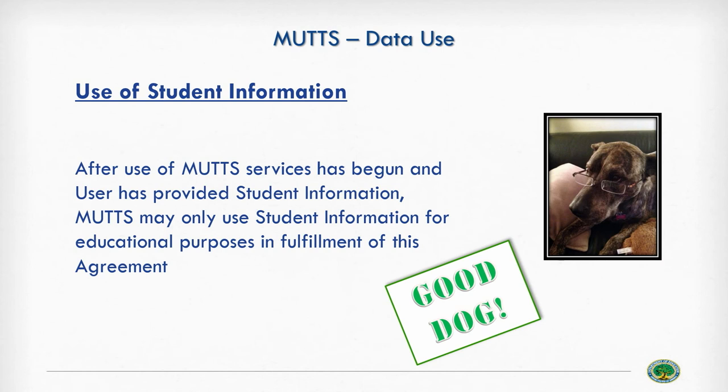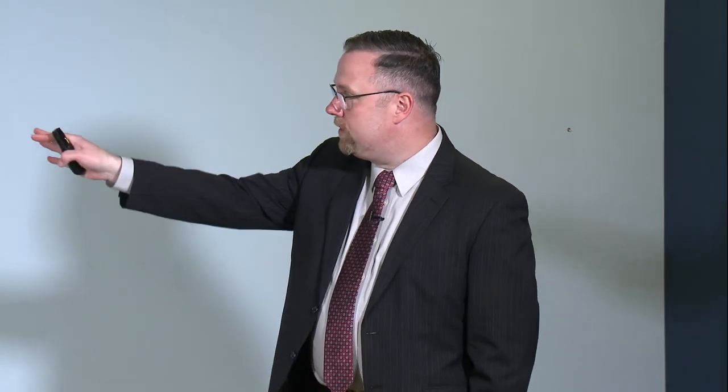A better provision would be: after use of MUTTS services has begun and the user has provided student information, MUTTS may only use student information for educational purposes in fulfillment of this agreement. This ties into the direct control requirement of only using data for the purpose or purposes for which it is being disclosed. A good dog provision would have this very narrow data use scope.